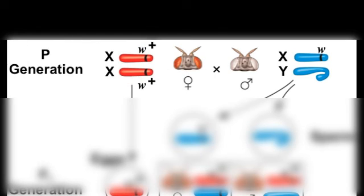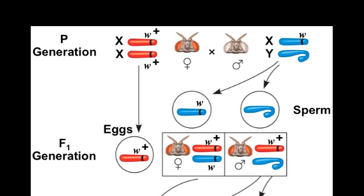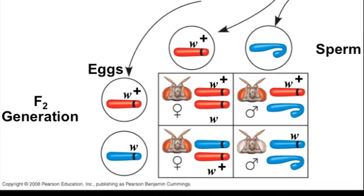Crossing this male with a true breeding wild type female having two wild type alleles for red eye produces the F1 generation with all red eyes. Following the X and Y chromosome and their alleles in the F2 generation, we can see how only the males of this generation have white eyes.